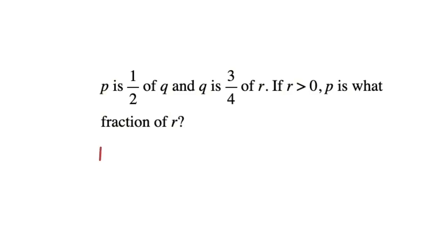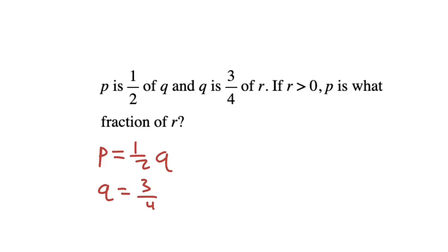So P is equal to one half of Q — I'll write P equals one half of Q. And Q equals three fourths of R, so let's write Q equals three fourths of R. And R is a positive number.